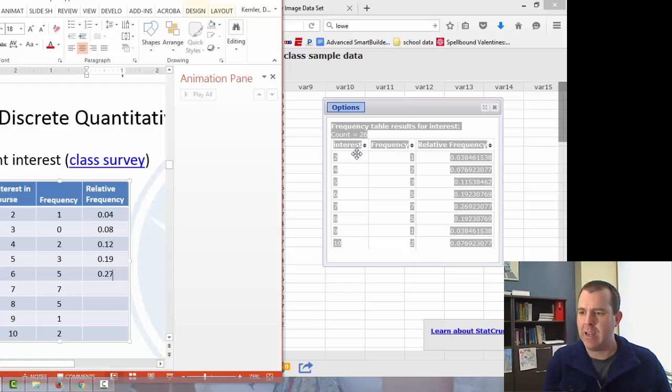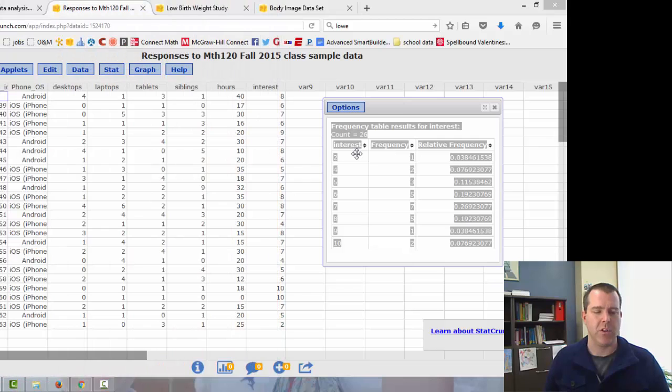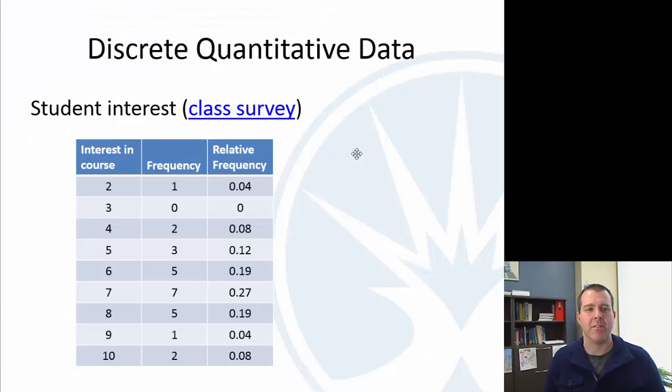And then we have the relative frequencies. Let's round to the hundredths place. One thing to keep in mind, because of rounding, sometimes you might be off if you added all of these up. It might say 1.01 or 0.99, but that's just due to rounding. So keep that in mind. That's quite possible.